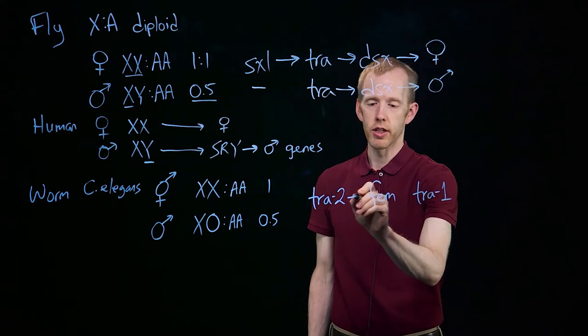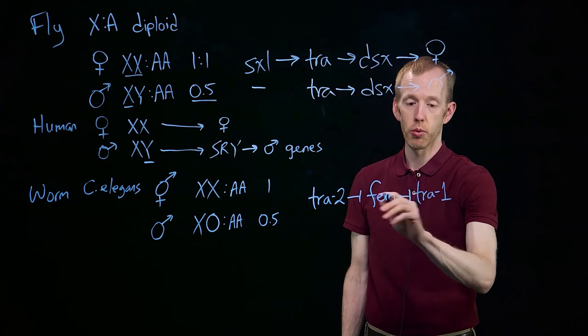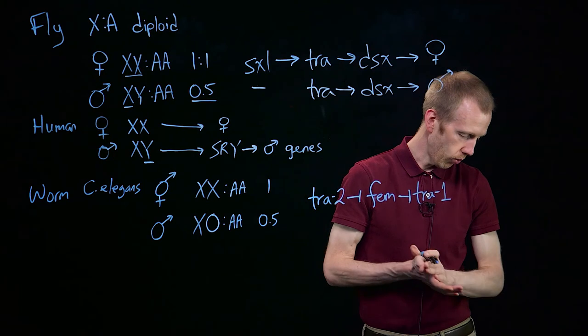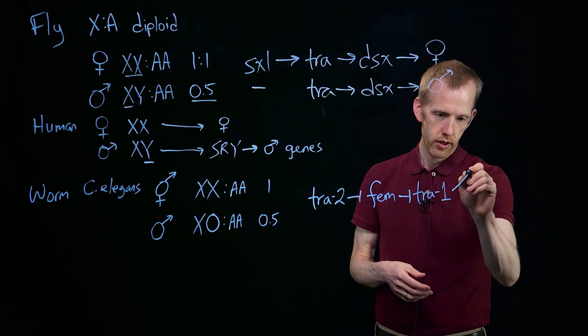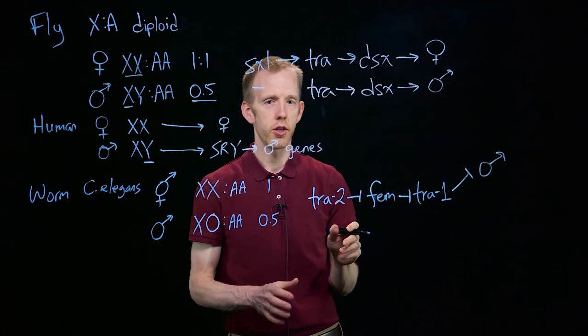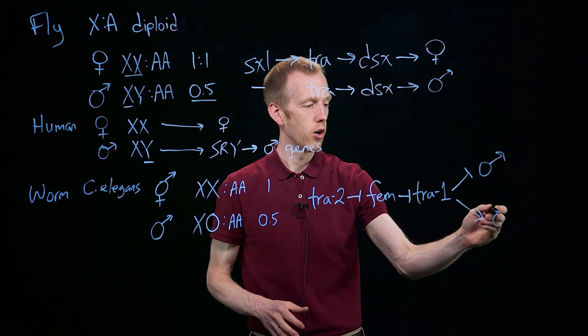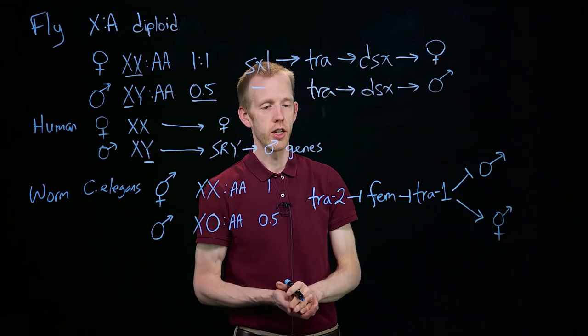And this is a repression cascade. So each of these genes represses the next. And what TRA-1's job is, is to repress the expression of male-specific genes. So you can also think of this as TRA-1 activates hermaphrodite, or female-related genes.